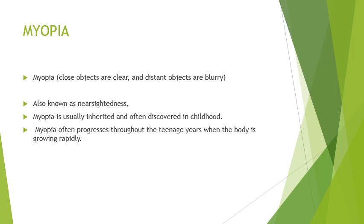In myopia, close objects are clear and distant objects are blurry. It is also known as nearsightedness. Myopia usually is inherited and often discovered in childhood. Myopia often progresses throughout the teenage years when the body is growing rapidly.